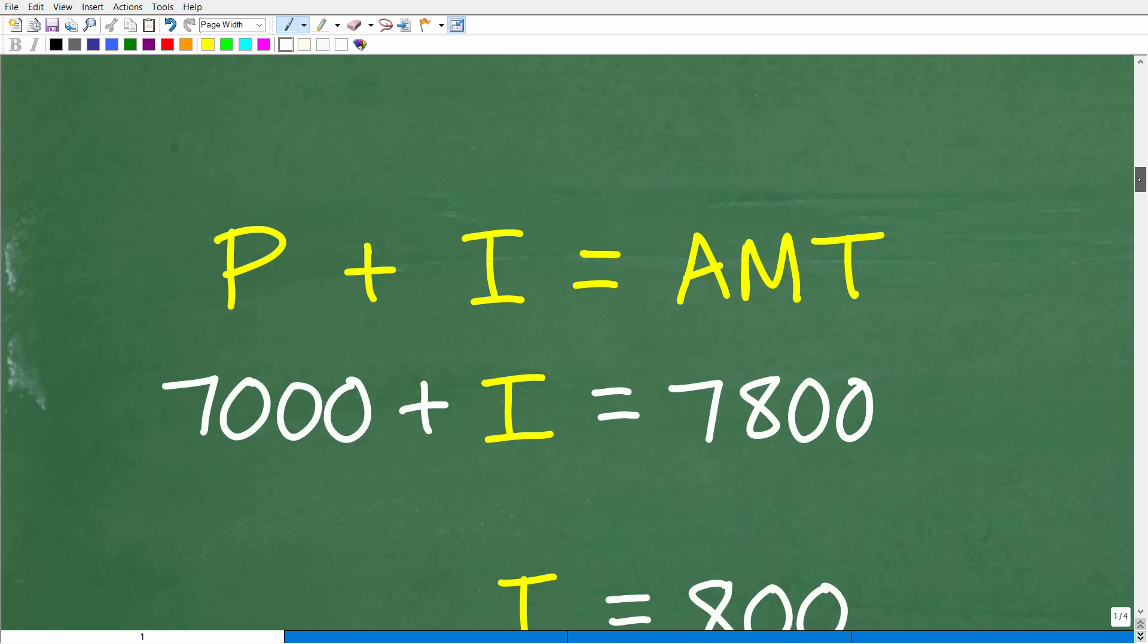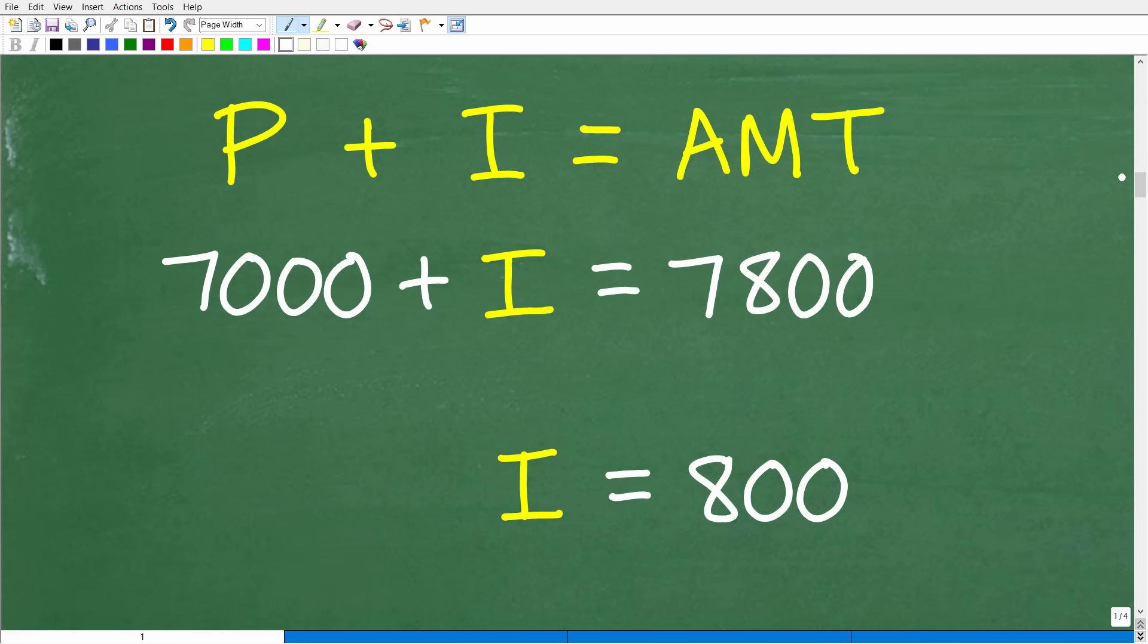You can kind of break this down into an algebra problem. But really, it's very easy to see if we have $7,000 as our principal starting amount. And our total amount after one year is $7,800. What is the amount of interest that we earned? Now, most of you can just see that, oh, $7,800, it's $800.